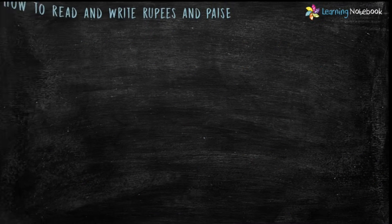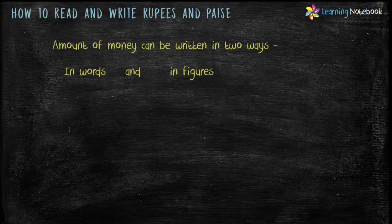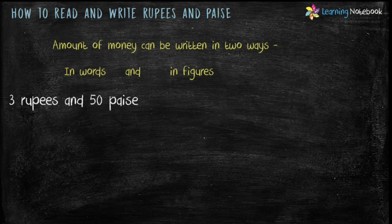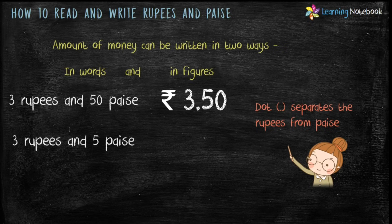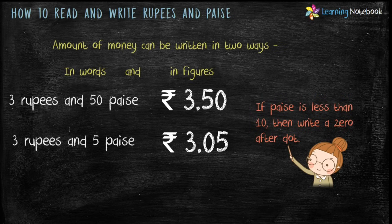Amount of money can be written in two ways — in words as well as in figures. For example, three rupees and 50 paise in figures is written as Rupees 3.50. Students, the dot separates the rupees from paise. The next example is three rupees and five paise, which in figures is written as Rupees 3.05.